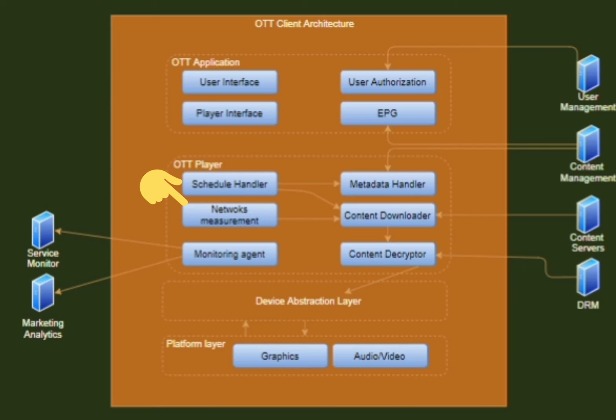The network measurement module measures and provides network-related information to the content downloader. The content downloader relies on this information to use the best algorithm and download the best possible profiles given the current network condition.